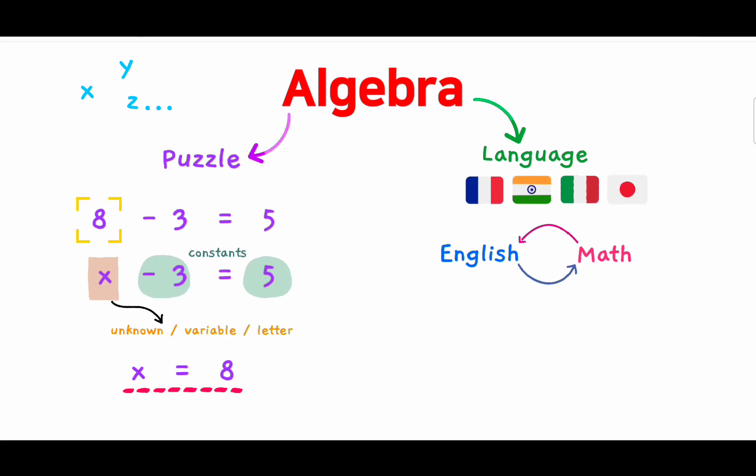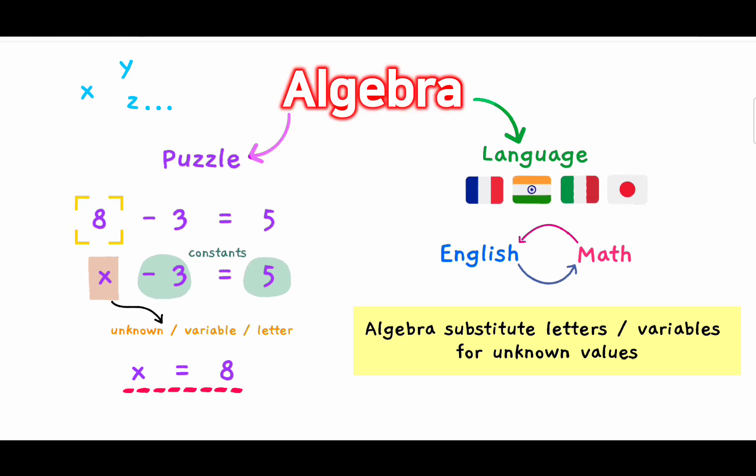We can understand from that, oftentimes algebra substitutes letters or variables for unknown values. That's why I said in the beginning, algebra is good to find secret things.